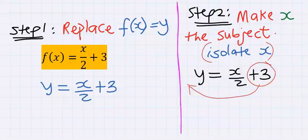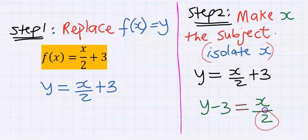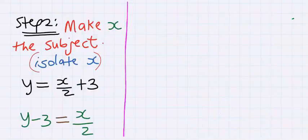Next we take two across and it's going to multiply everything on this side. Hence these two will move and we're going to have 2(y-3) is equal to x.